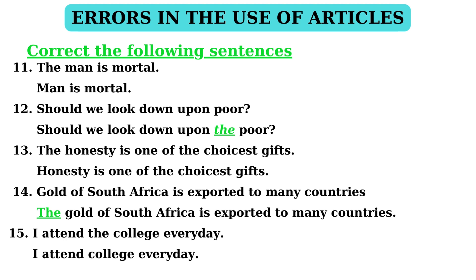In sentence 13: 'The honesty is one of the choicest gifts.' — We have to omit article 'the' because abstract nouns are used in their general sense. The correct statement is: 'Honesty is one of the choicest gifts.' In sentence 14: 'Gold of South Africa is exported to many countries.' Here, 'the' is to be used before 'gold', especially before a noun with a specifying or particularizing impact. The correct statement is: 'The gold of South Africa is exported to many countries.'